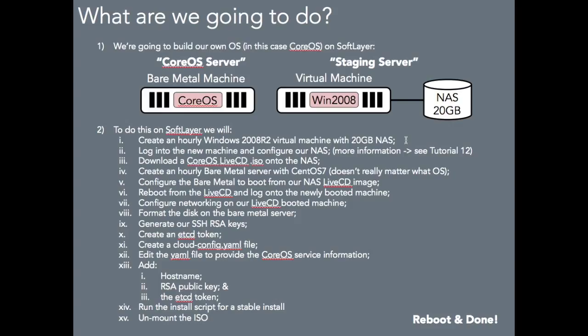Once that machine is there, we're going to download the Live CoreOS CD onto the NAS. While we're doing that, we're going to kick off the build of our small bare metal server. It's going to have CentOS on it — it doesn't really matter, because we're going to be rubbishing and trashing that OS. We're then going to configure that bare metal machine to boot from this NAS, from the Live CD.